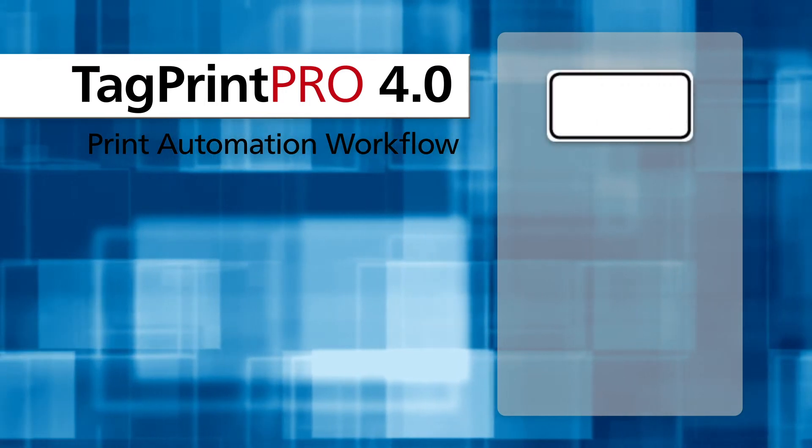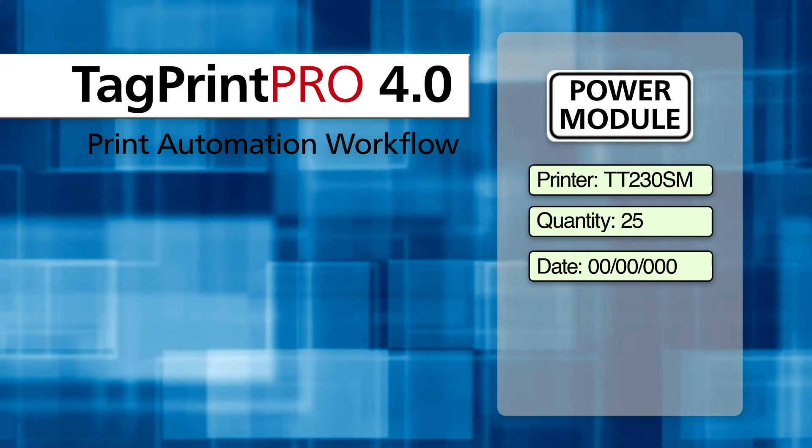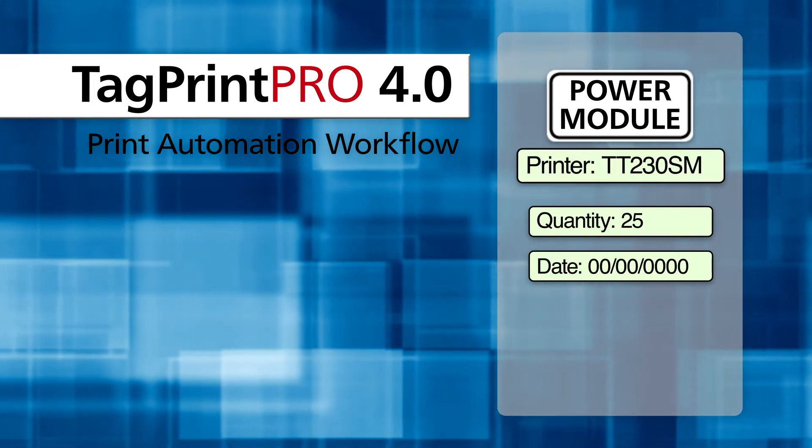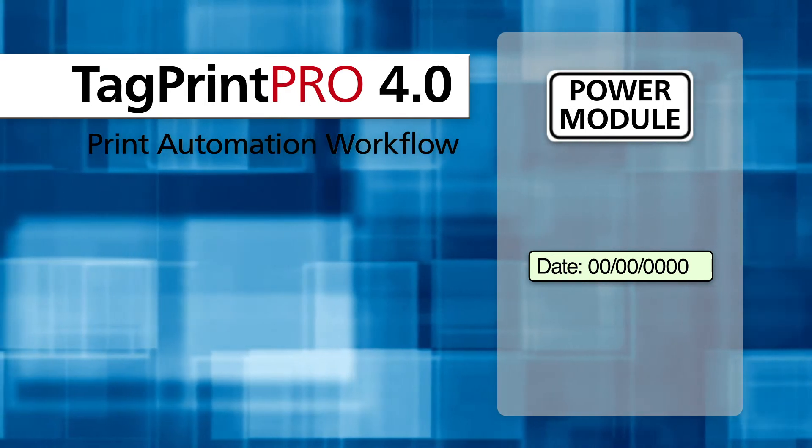Start with creating a label. When you save a label in TagPrint Pro, you can also add time-saving extras to the file, like what printer it goes to, and the print quantity. You can even add variable data, like a date code.